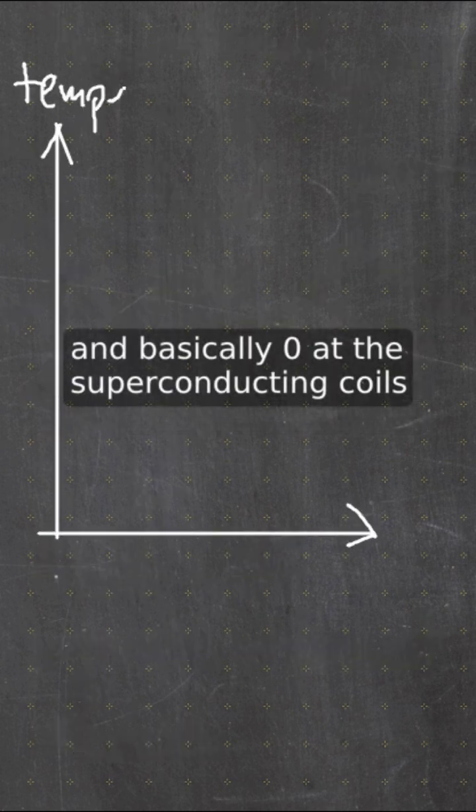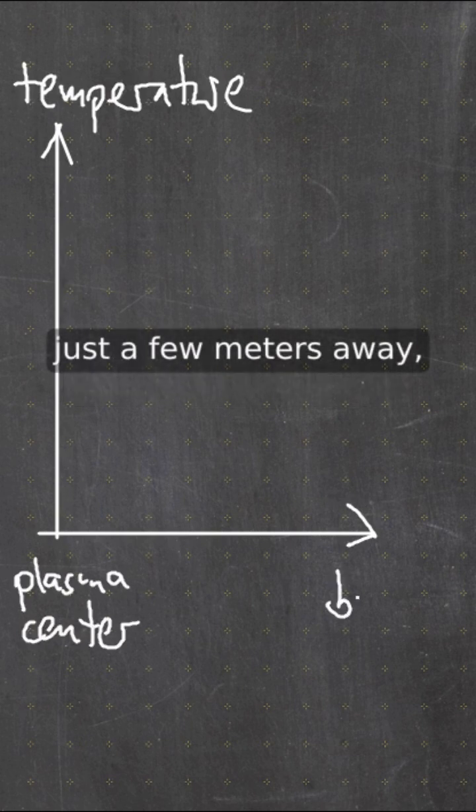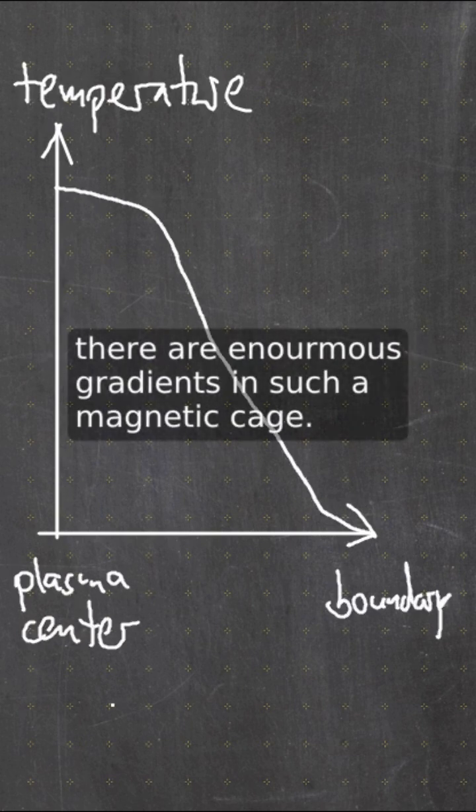With 150 million degrees in the center and basically zero at the superconducting coils just a few meters away, there are enormous gradients in such a magnetic cage.